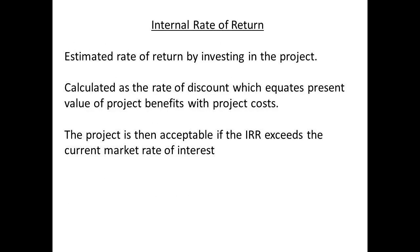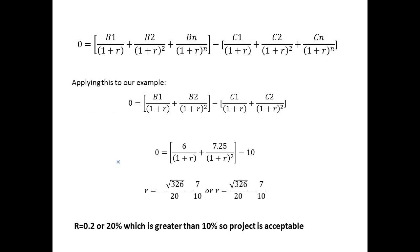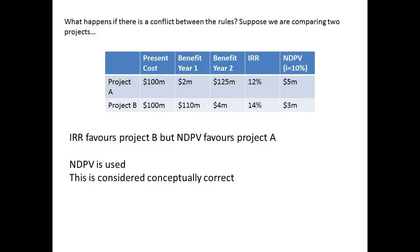An alternative method is the internal rate of return method, where the rate of discount is calculated, and if this exceeds the current market rate of interest, then the project is deemed acceptable. The formula is shown here, and the figures from the previous example are used. The result gives a rate of return of 20%, which is greater than the current rate of interest of 10%. What happens if the two methods show different results? This can happen if we are considering two projects and trying to compare them. In this case, the outlay for the two projects is the same, but one project has the return mainly in year 2, the other has the benefits mainly in year 1. The results suggest that by NDPV the better project is A, but by internal rate of return it is B. The practice is to accept the NDPV figure, as this is considered to be conceptually correct.